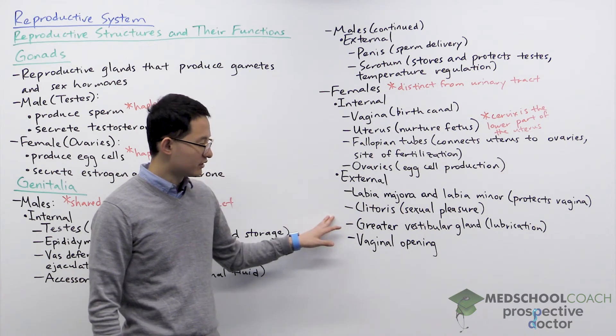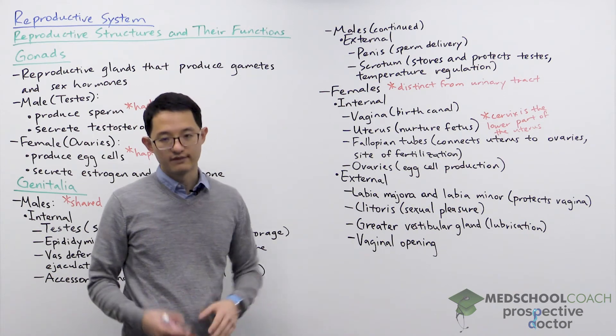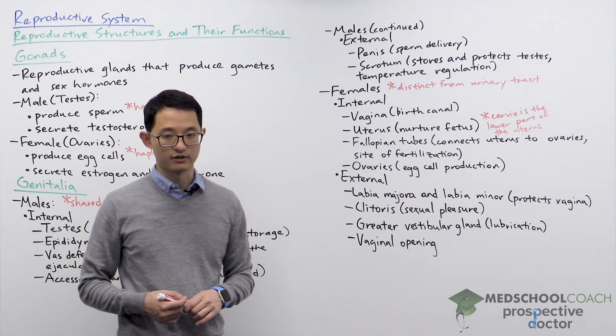You have the greater vestibular gland which provides lubrication and you also have the vaginal opening which of course is important for sexual functioning to occur.